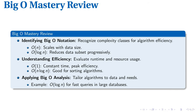Big O notation can be mastered by correctly identifying the complexities of various algorithms. Remember that O(N) complexity scales with the size of the data, while O(log N) complexity signifies that data subsets are reduced progressively, improving efficiency. It is equally important to understand the implications of different complexity levels — an algorithm with constant time complexity O(1) signifies peak efficiency, while O(N log N) is well suited for sorting algorithms.